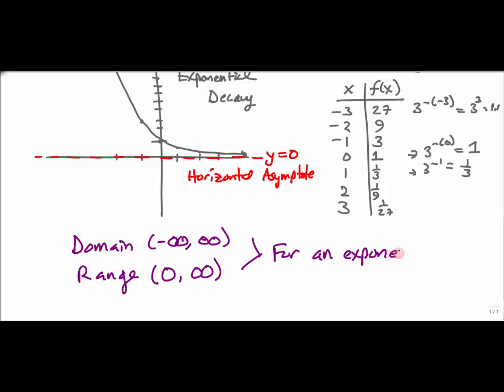If I make transformations to the exponential function — like adding 4 or subtracting 6 — that will change the domain and range. But these are the domain and range for the basic exponential functions such as 3^x or 3^(-x). Those are some basic characteristics of exponential functions.